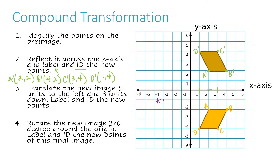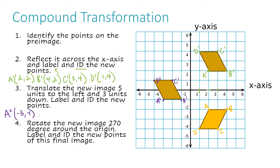Now I need to move B prime five units left and three units down — it's right here. Then C prime five left and three down. And finally D prime five left and three down. Connecting those four points gives me my shape. My A double prime is at (-3, -1). B prime is at (-1, -1). C prime is at (-2, 1). And D prime is at (-4, 1).